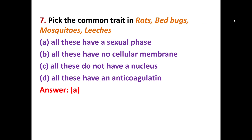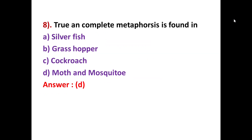MCQ number seven: pick the common trait between rats, bed bugs, mosquitoes, and leeches. The correct answer is option A — all of these have an asexual phase. For example, in Anopheles mosquitoes, sporozoites and merozoites are formed; the sporozoites represent the sexual phase. So all these organisms exhibit an asexual phase.